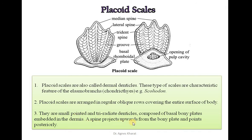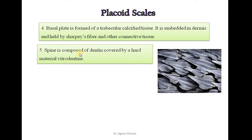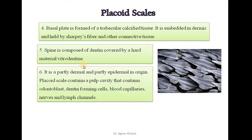A spine projects upward from the bony plate and points posteriorly. The basal plate of Placoid Scales is formed of trabecular calcified tissues. It is embedded in the dermis and held by Sharpey's fibers and other connective tissues. The spine is composed of dentine covered by a hard material called vitrodentine. It is partly dermal and partly epidermal in origin. Placoid Scales contain a pulp cavity that contains odontoblasts, dentine-forming cells, blood capillaries, nerves, and lymph channels.